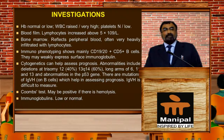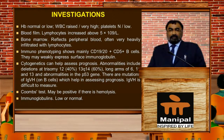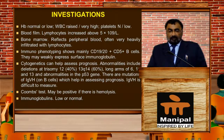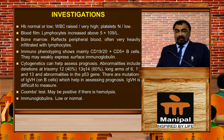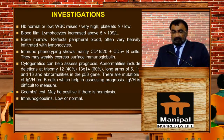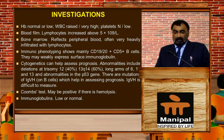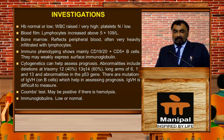Investigations in CLL: hemoglobin is normal or low, WBC count is raised, and platelets may be normal or low. Blood film shows increased lymphocytes, which may be raised five times. Bone marrow often reflects the peripheral smear and is very heavily infiltrated with lymphocytes. Immunophenotyping shows mainly CD19, CD20, and CD5 with B cells, and they may weakly express surface immunoglobulins.